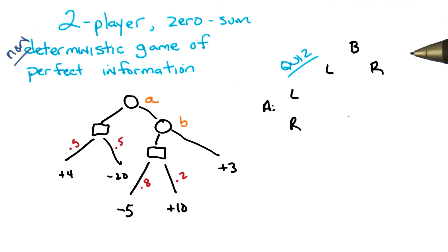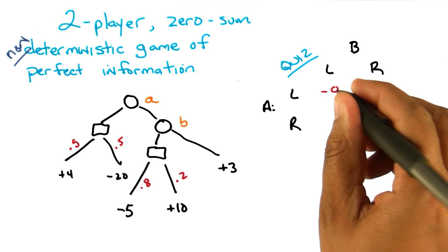So, right, if A goes left, it doesn't matter what B does. At that point, there's a chance node, and it's 50-50, 4 and negative 20, which I feel like ought to be negative 8. Ah, that's right. How'd you get negative 8?